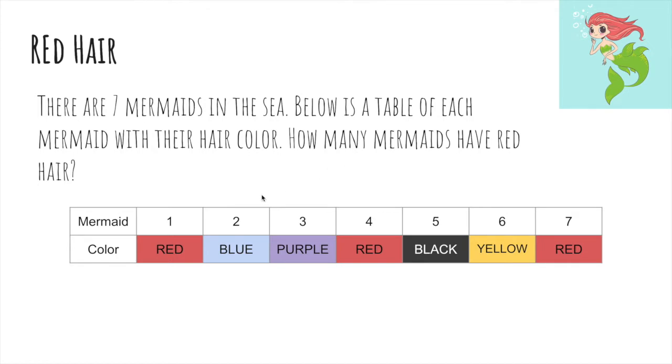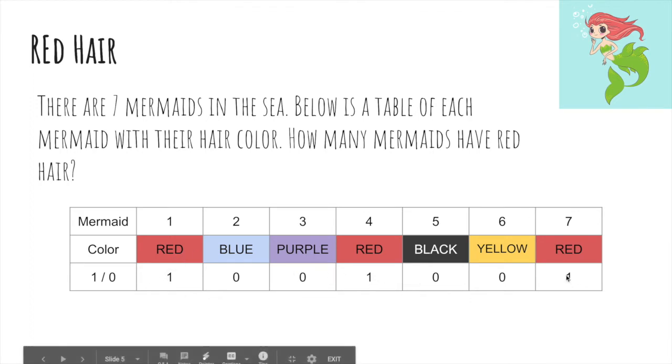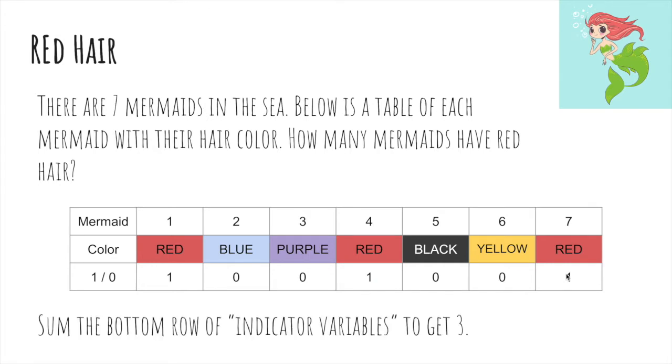Well, it's not a trick question, the answer is three. But let's create this extra row, which is one if the hair color was red and zero otherwise. So here we have three ones. And so actually it turns out we can sum the bottom row of indicator variables to get three. So indicator meaning one if it's red and zero if not. And if we sum this row, we'll get our answer.